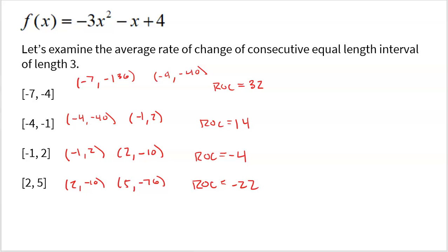We first notice that the rate of change is decreasing: 32, 14, negative 4, negative 22. If your rate of change is decreasing as you move throughout the function, that's the definition of concave down. So this is a parabola opening down — concave down. We knew this from the negative leading coefficient, but it's also proven through the definition. And the rate of change decreases by the same value — down 18 each time.